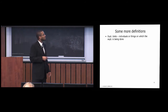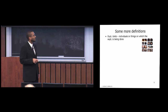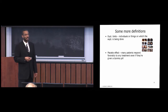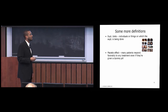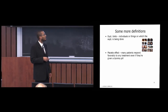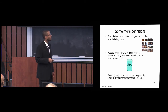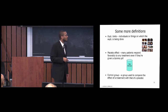More definitions. Experimental units are the individuals or things on which the experiment is done — in the hair growth experiment, these are people. There's also the placebo effect: many patients respond simply knowing they have a treatment, even if it's just a dummy pill. In this experiment, the placebo would be plain shampoo. A control group is the group that receives the placebo, so we can compare the effects of the treatment against it.